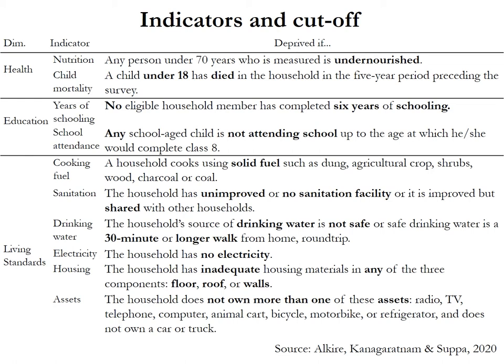Across living standards, individuals are deprived if their household uses solid fuel for cooking, uses unimproved or shared sanitation, consumes unsafe drinking water or water at least a 30-minute round trip away, has no electricity, has inadequate housing materials such as a dirt floor or rudimentary roof and walls. Finally, a household is deprived in assets if they do not own more than one of the eight small assets: radio, TV, telephone, computer, animal cart, bicycle, motorbike, and fridge.